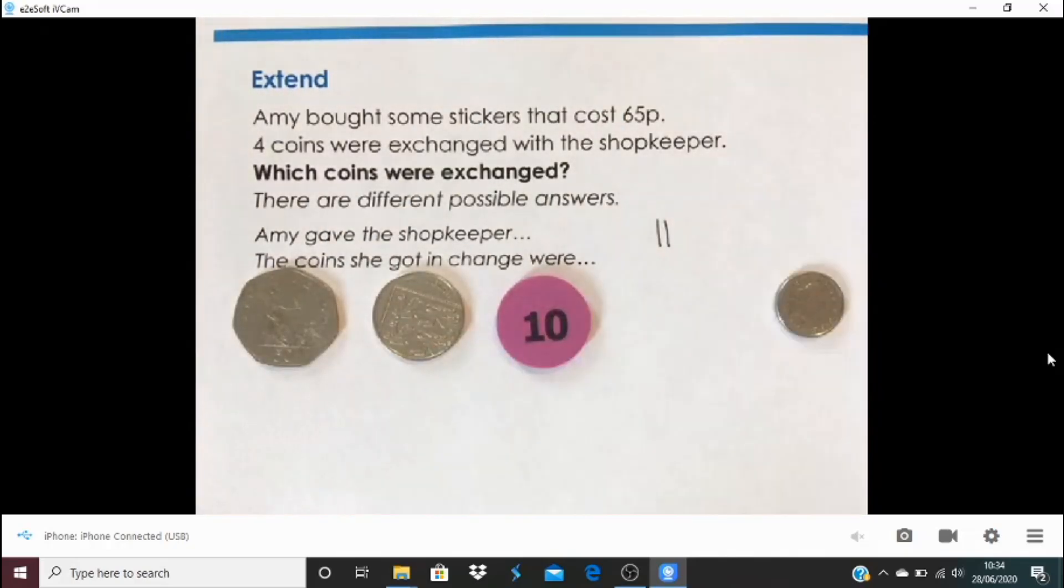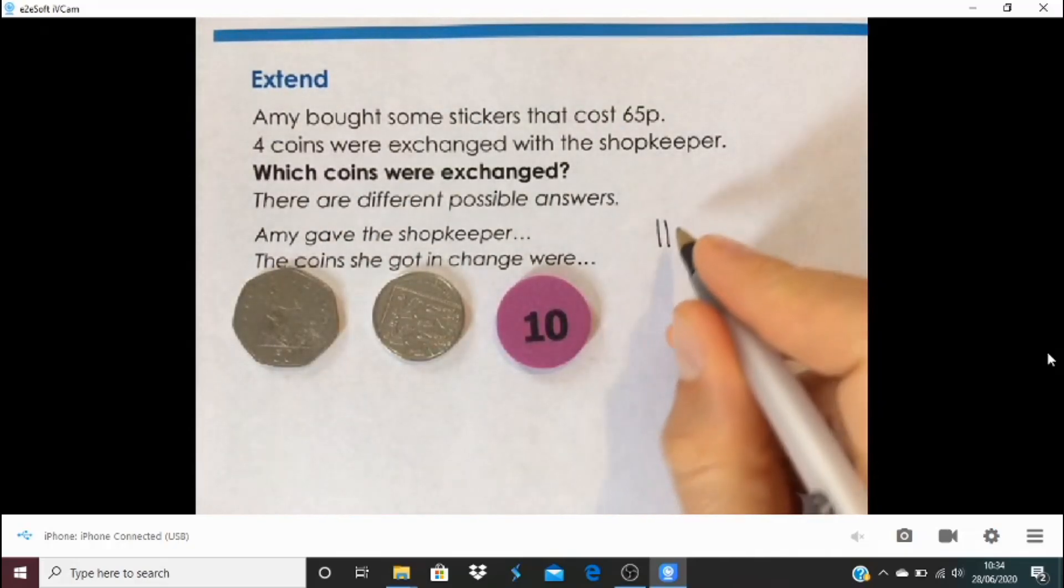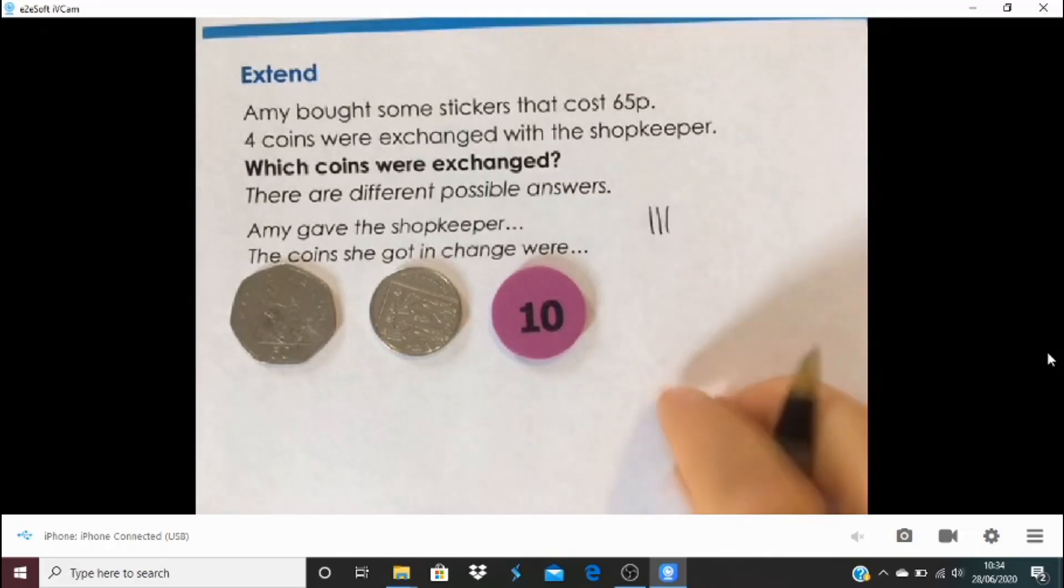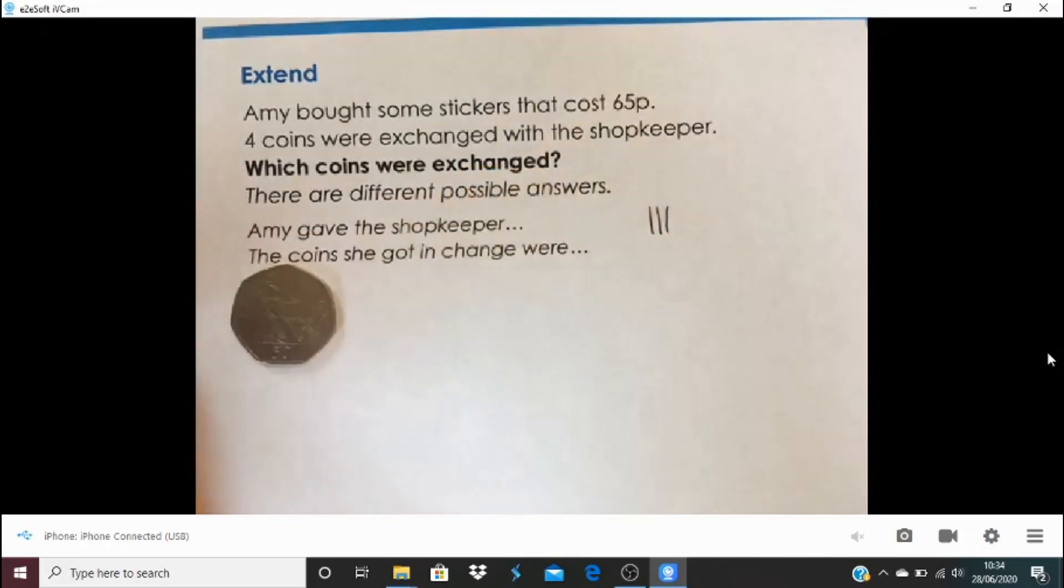I could get 5p change from the shopkeeper. There is another way. Now I could pay 70p using two coins, a 50p and a 20p, but then I would be owed 5p change and the shopkeeper can't give me 5p change using two coins. So we've used four coins in total.